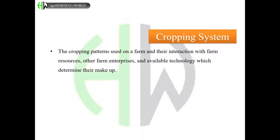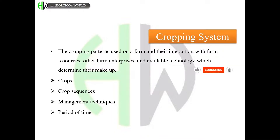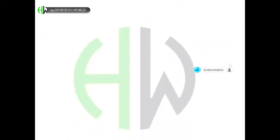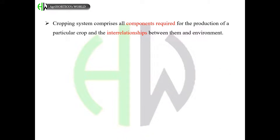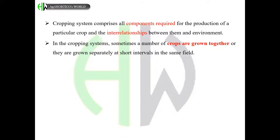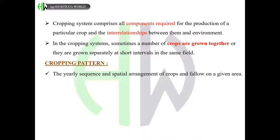Next, the cropping system. The cropping patterns used on a farm and their interaction with farm resources, other farm enterprises, and available technology determine their makeup. It includes crops, crop sequences, management techniques, and period of time. Cropping system comprises all components required for the production of a particular crop and the interrelationships between them and the environment.